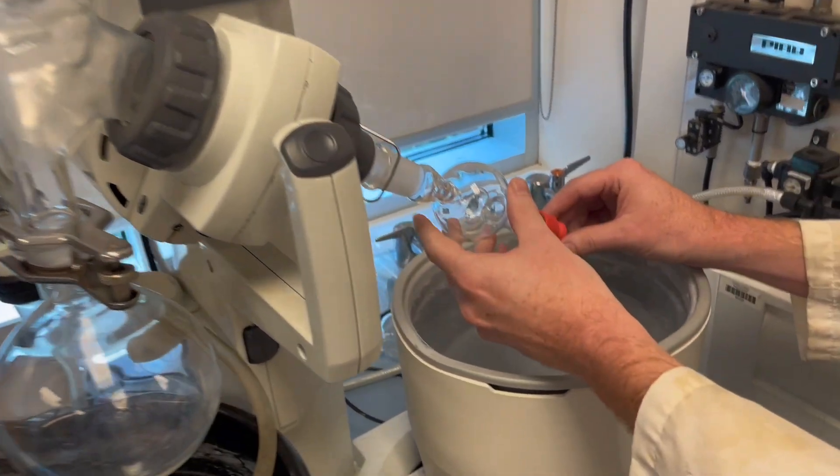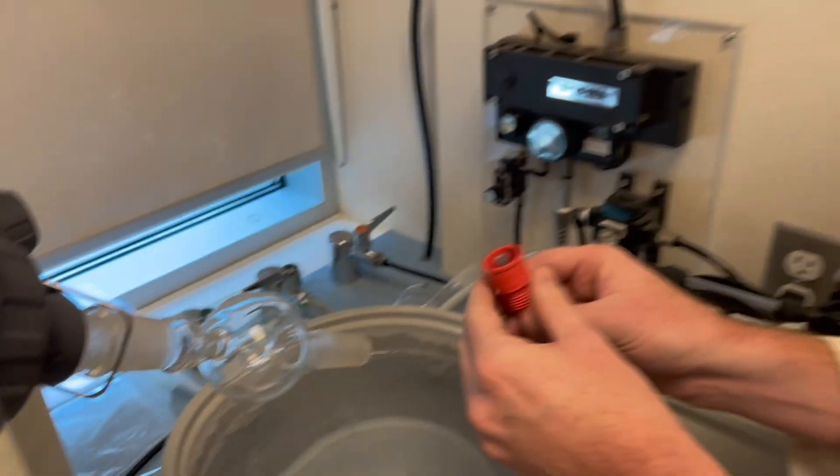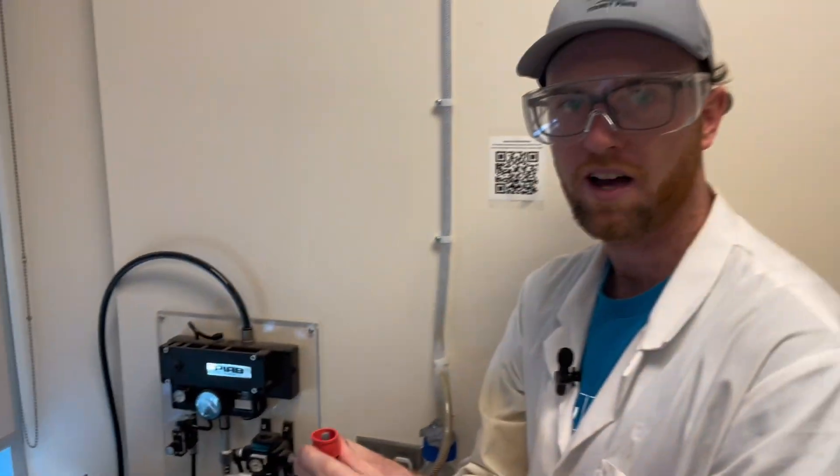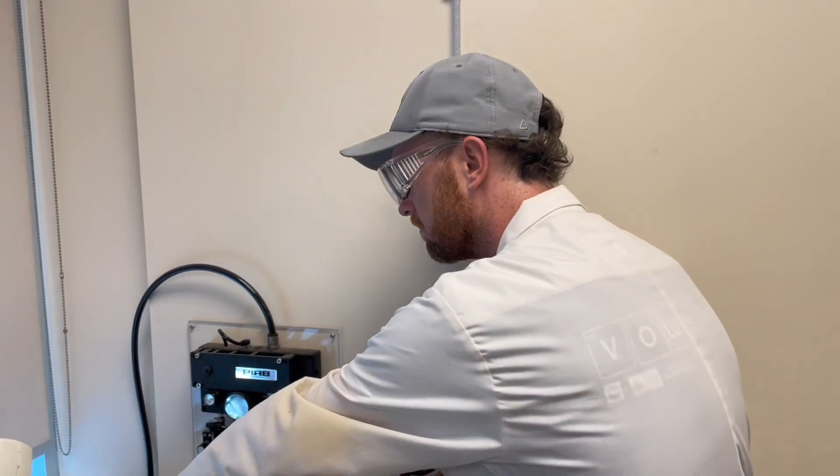And once the vacuum is out of the system, this can be disassembled, and the septa with the blunt tip vials can be reused. And that's all there is to it.